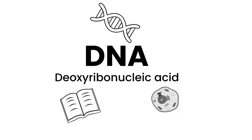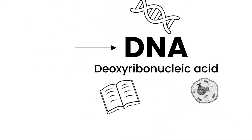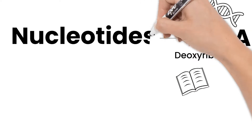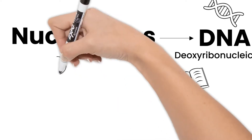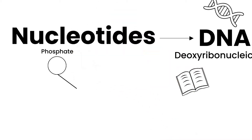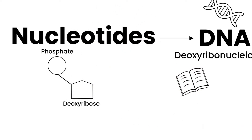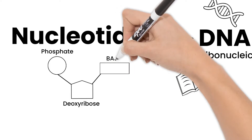Taking an even closer look, DNA is made up of nucleotides. Nucleotides have three main parts: a phosphate, a five-carbon sugar called deoxyribose, and a nitrogen base.